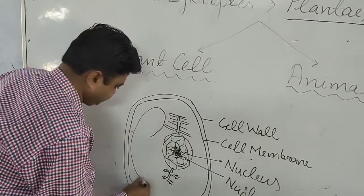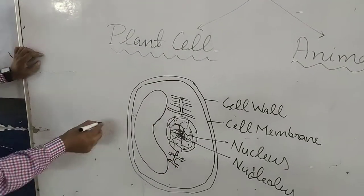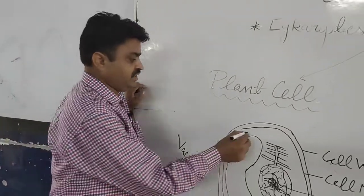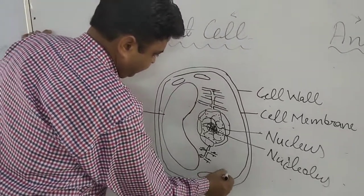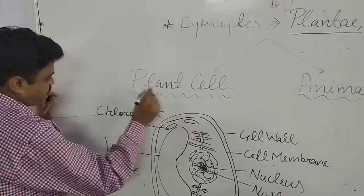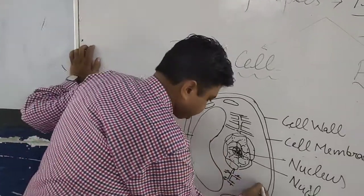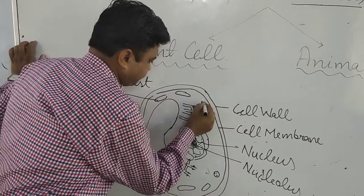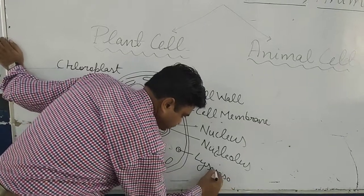An important structure found in the plant cell is the large-size vacuole. There are also other structures called chloroplasts — or chromoplasts or leukoplasts. Additionally, there are structures called lysosomes found inside the plant cell.